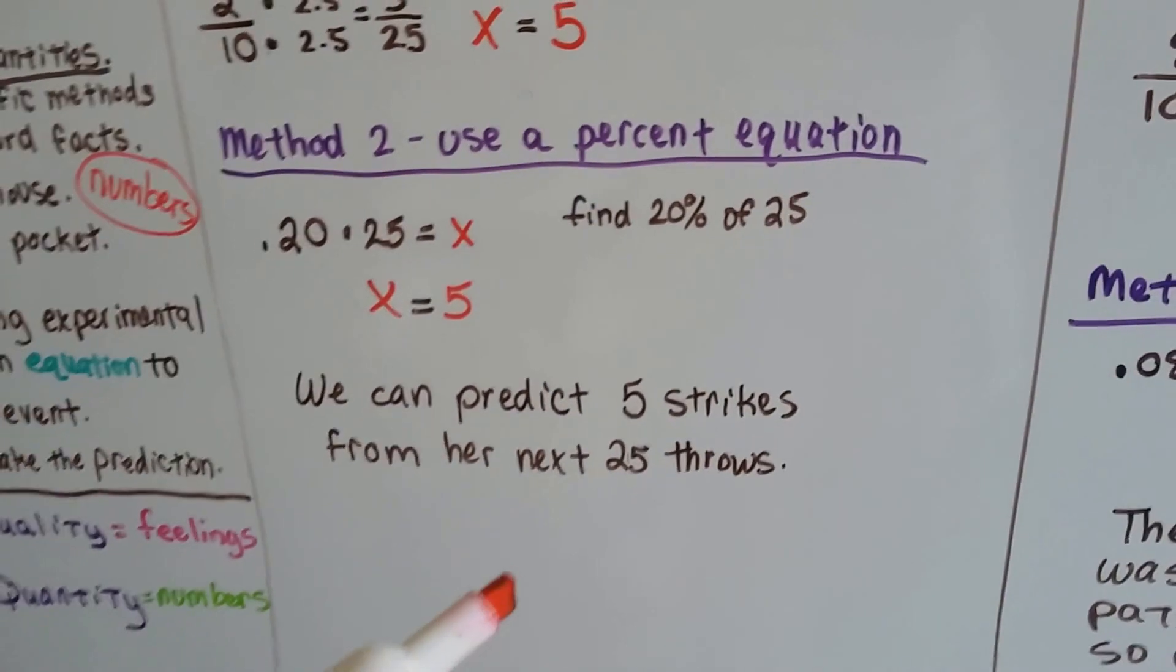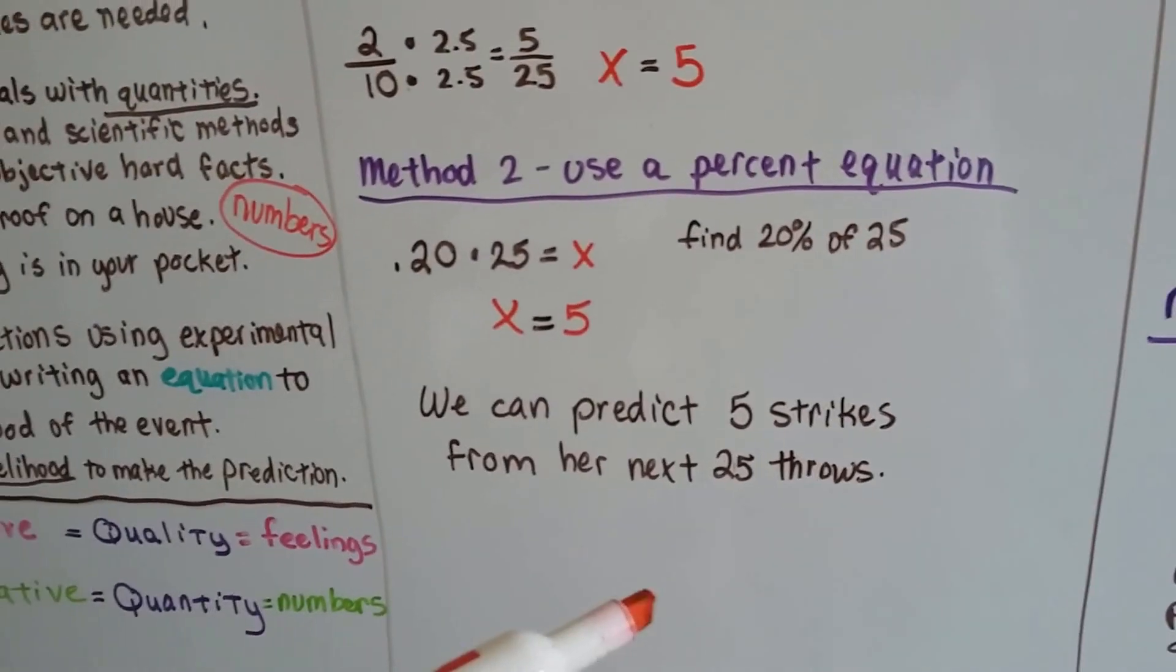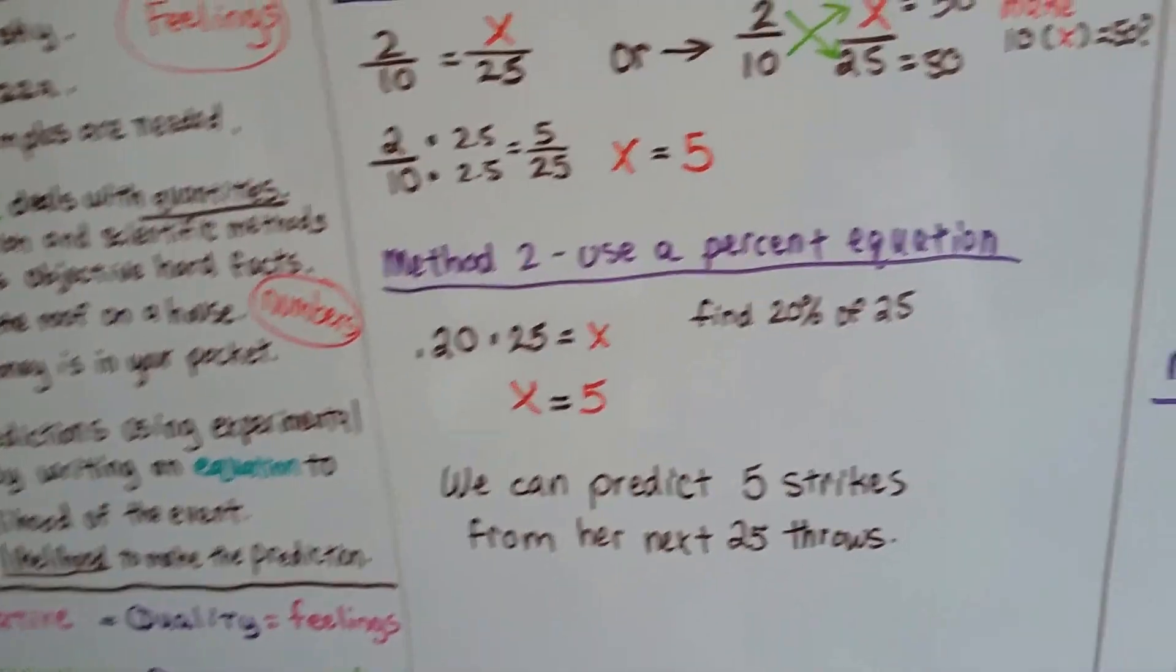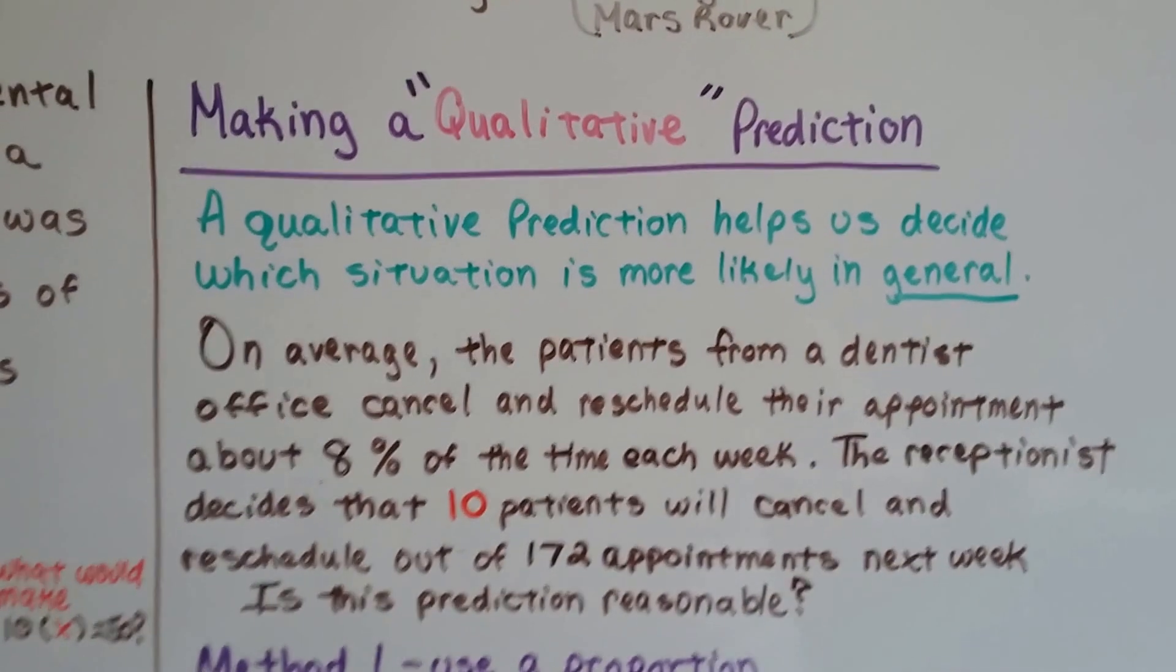Is that exactly what she's going to get? Can we prove that that is exactly what she's going to get? No. So that would be qualitative, wouldn't it?